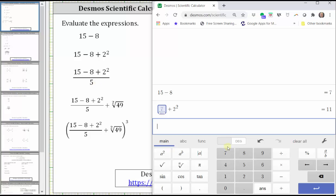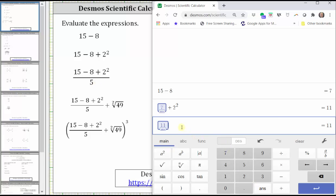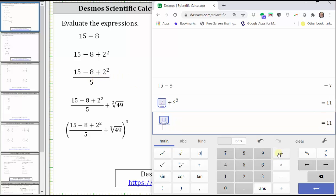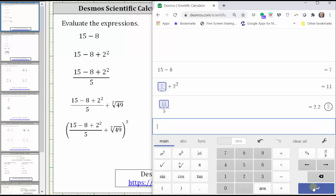To evaluate this, we can click the answer key, which brings up the value of the previous expression, and then simply divide by 5, which is equal to 2.2 as a decimal.